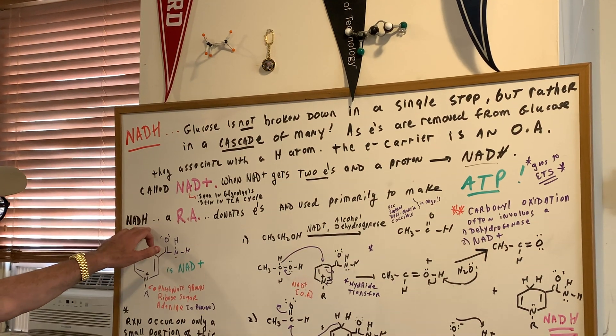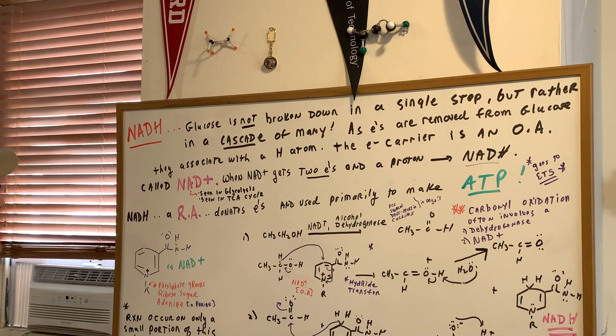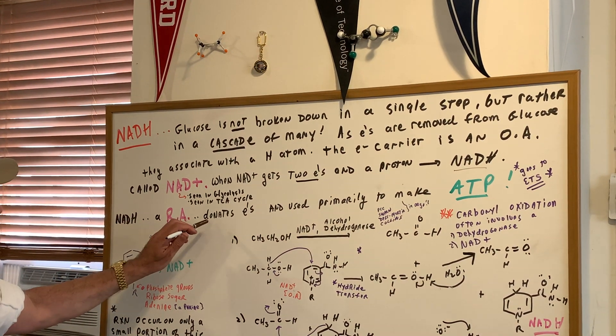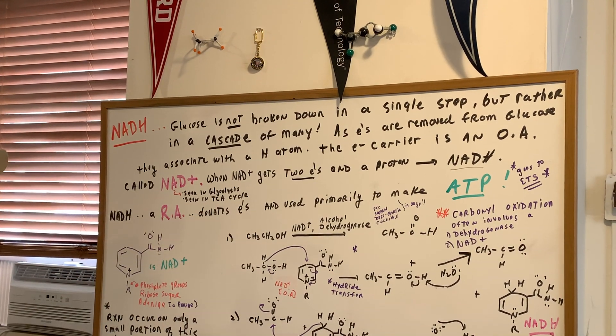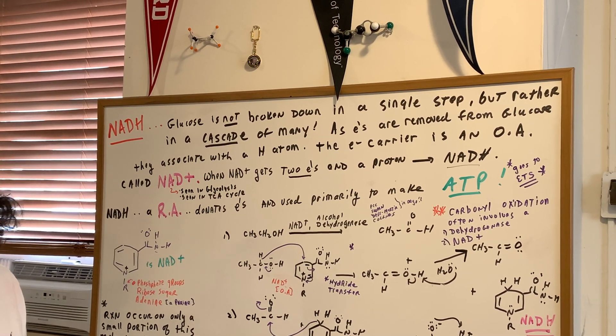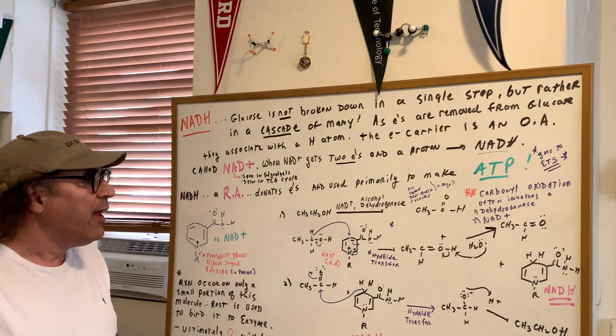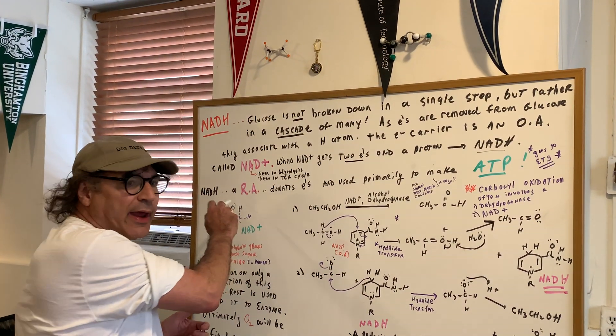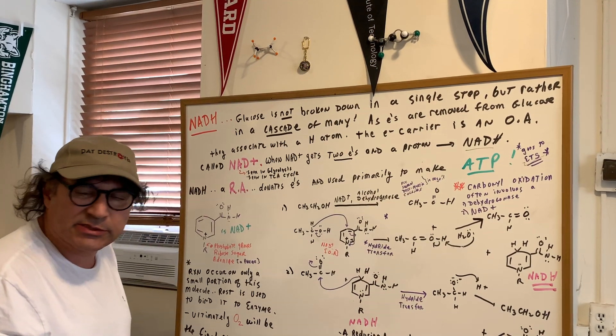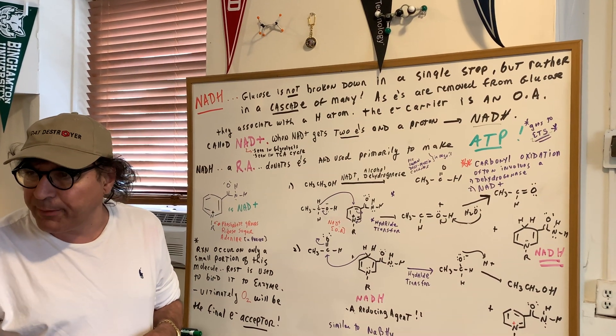Now, NADH is going to function as a reducing agent, and I'll show you how it works in a few minutes. As a reducing agent, it's going to donate electrons and is used primarily to make ATP. And if you remember, we saw NADH, it went to the electron transport system, and that's where most of the ATP is made.